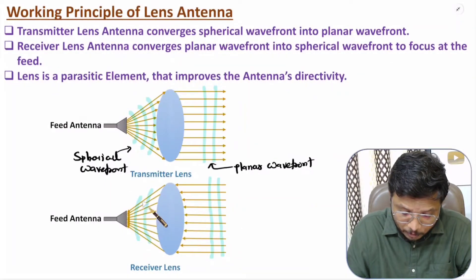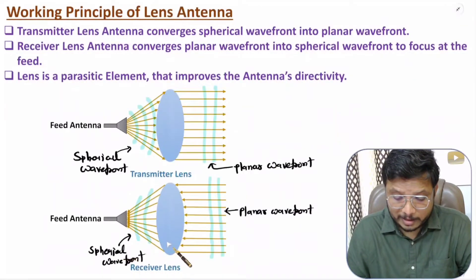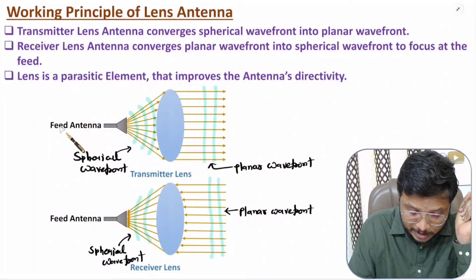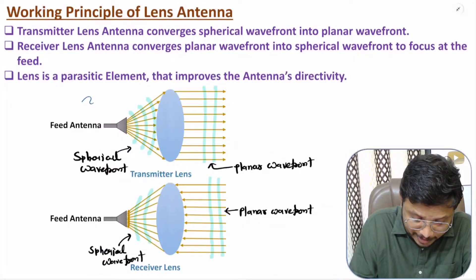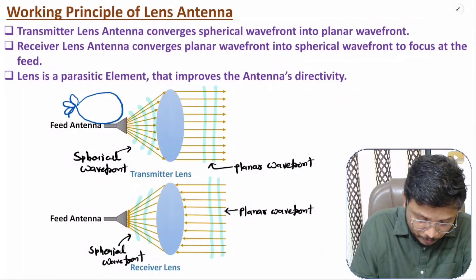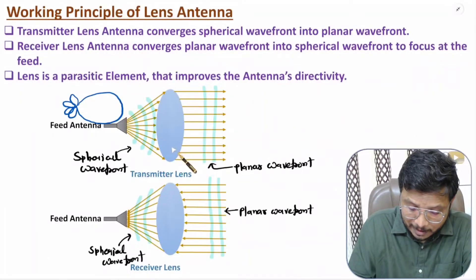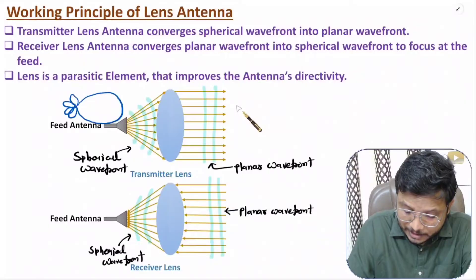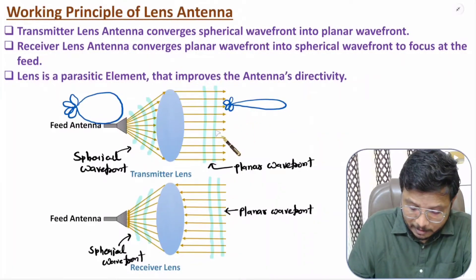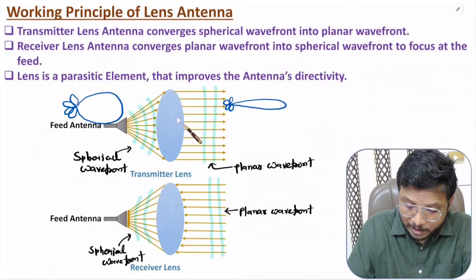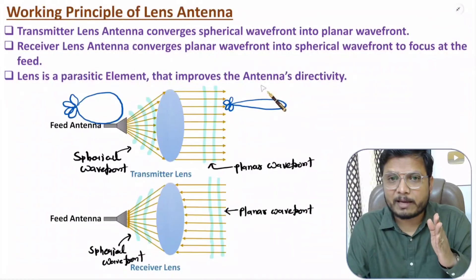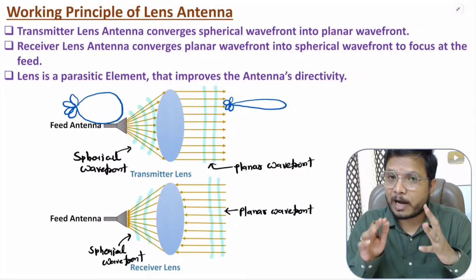The lens is also improving the directivity of the antenna. If you observe the radiation pattern of the feed antenna alone, it has a major lobe and minor lobes. But after using the lens, directivity improves — the major lobe has a very narrow beam width and smaller minor lobes. So the lens antenna converts spherical wavefront into planar wavefront, resulting in narrow beam width and higher directivity.